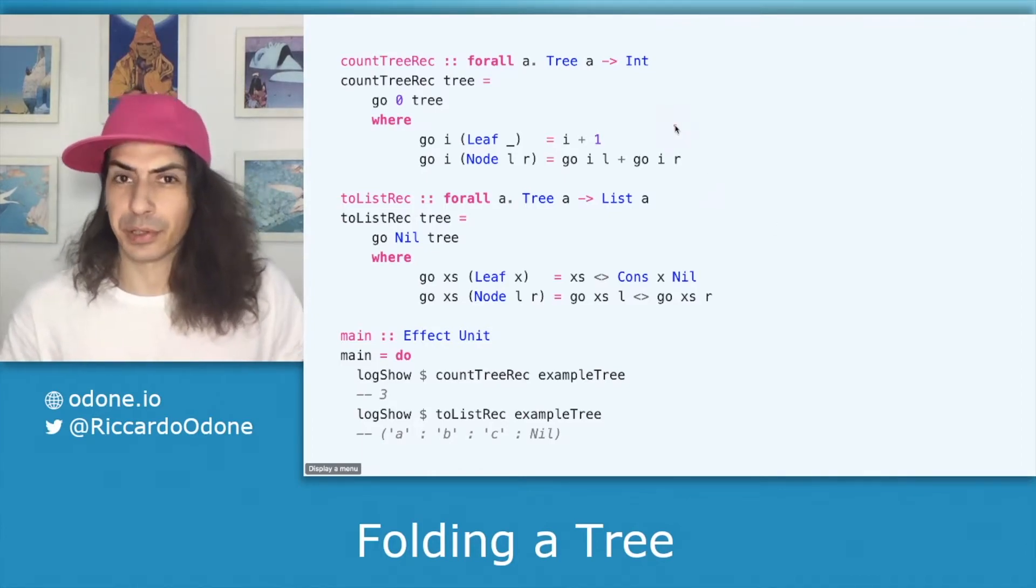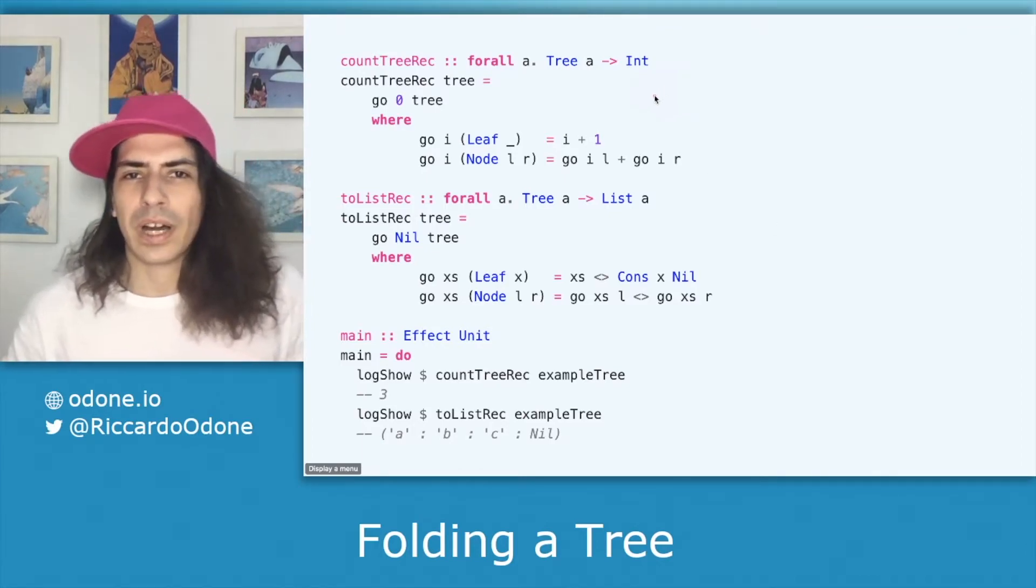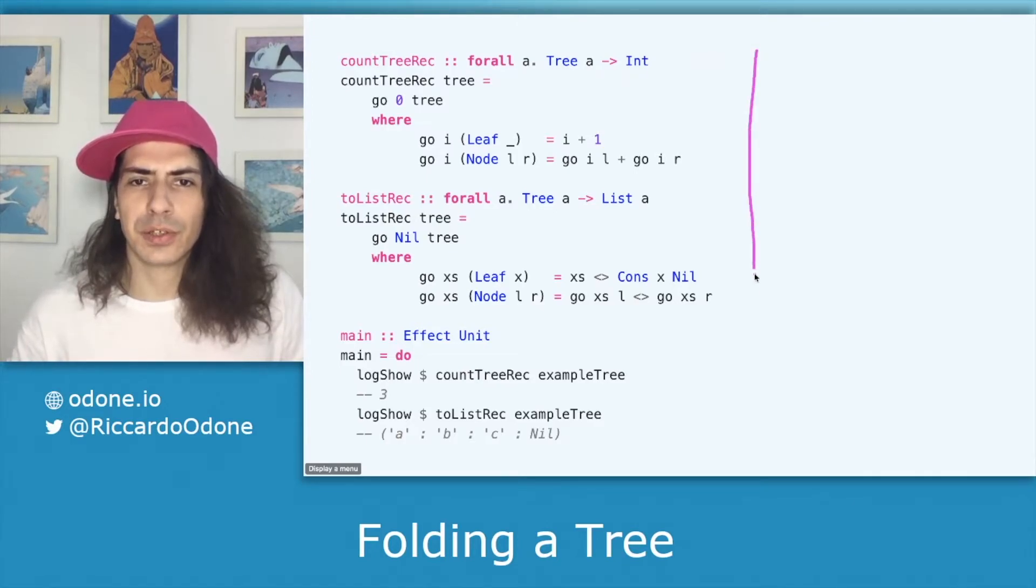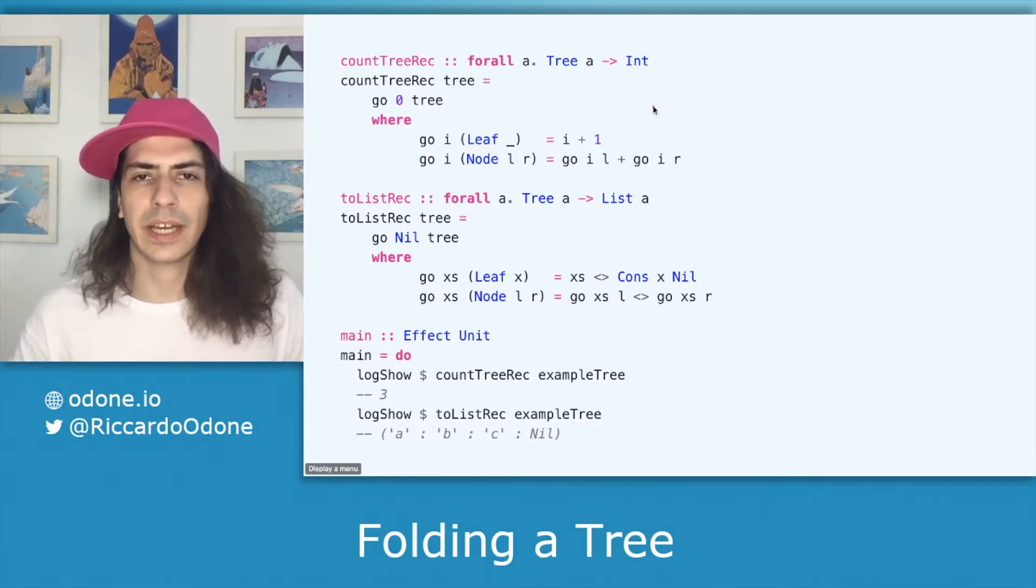Since the data type is recursive one idea would be to implement recursive functions that are able to do that. In the case of counting the amount of leaves we just start with zero as a counter and then every time we encounter a leaf we do plus one to that counter and the recursive case is going down either the right or the left tree.